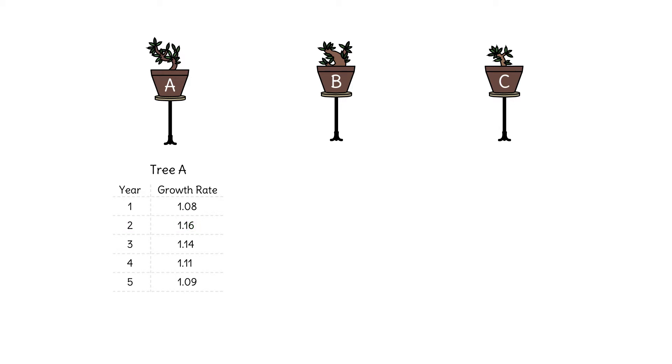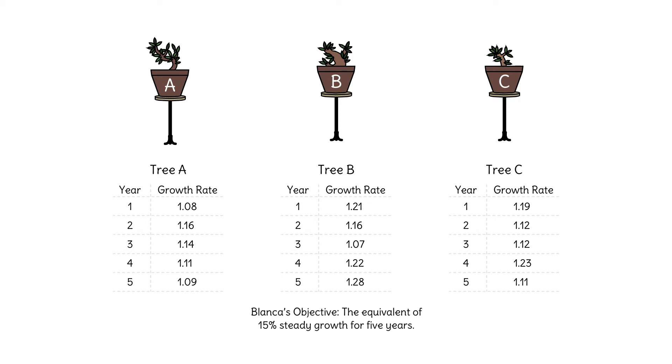The table shows the growth rates for five years. Here are the five-year growth rates for two of Blanca's other trees. The growth rates vary from year to year and from tree to tree. Blanca would really prefer her trees to grow at a steady 15% every year.